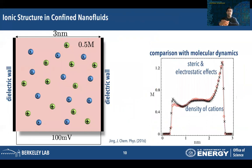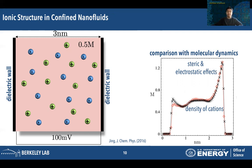I'll now describe three examples using DISCURSE to simulate electrokinetic phenomena in nanofluids. In the first example, consider a charged nanofluid with 0.5 molar concentrations of anions and cations confined between two dielectric walls three nanometers apart, with a potential difference of 100 millivolts applied across it. On the right, the molar concentration of cations is shown as a function of distance from the wall. The two curves correspond to results from DISCURSE and molecular dynamics, and the two methods compare very well. Because of the potential difference, cations agglomerate on one side of the wall, but we also see a small peak on the other side due to steric interactions between ions of finite size — a phenomenon that cannot be captured by a continuum electrolyte solution.